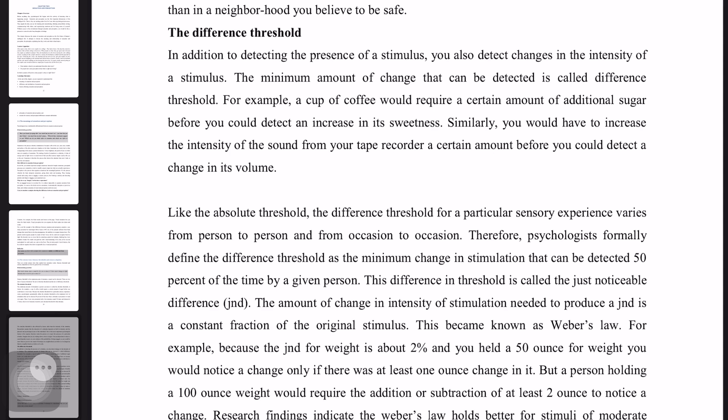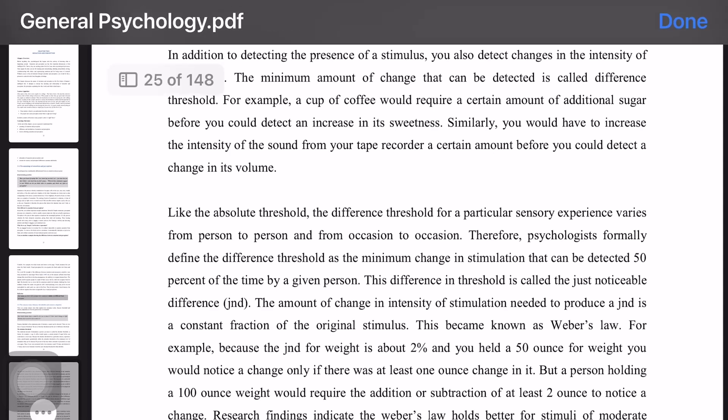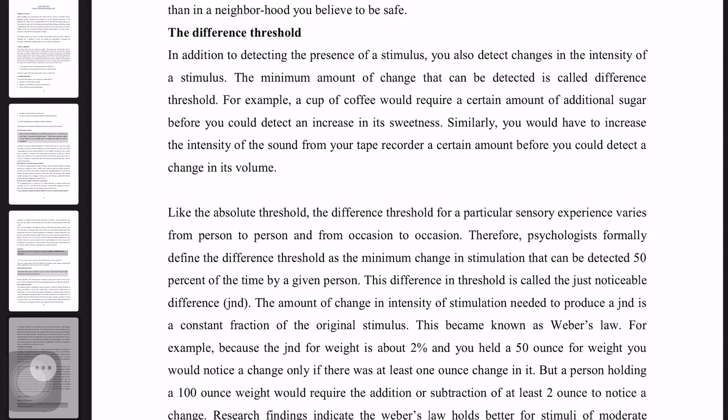This difference in thresholds is called Just Noticeable Difference. The amount of change in intensity of stimulation needed to produce a Just Noticeable Difference is a constant fraction of the original stimulus. This is called Weber's Law.